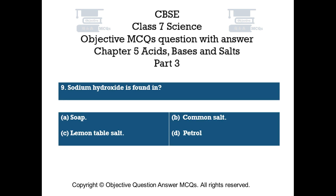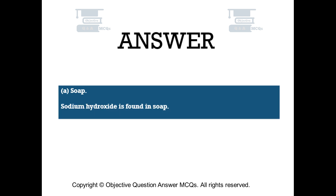Question number 9: Sodium hydroxide is found in. Option A: soap. Option B: common salt. Option C: lemon table salt. Option D: petrol. The right answer is option A — soap. Sodium hydroxide is found in soap.